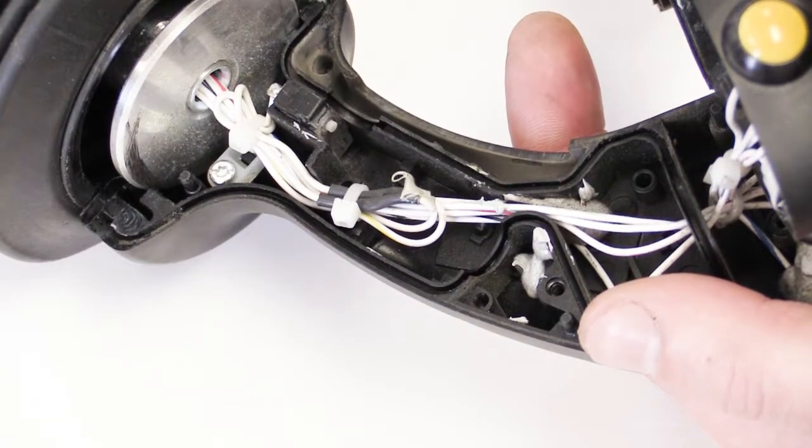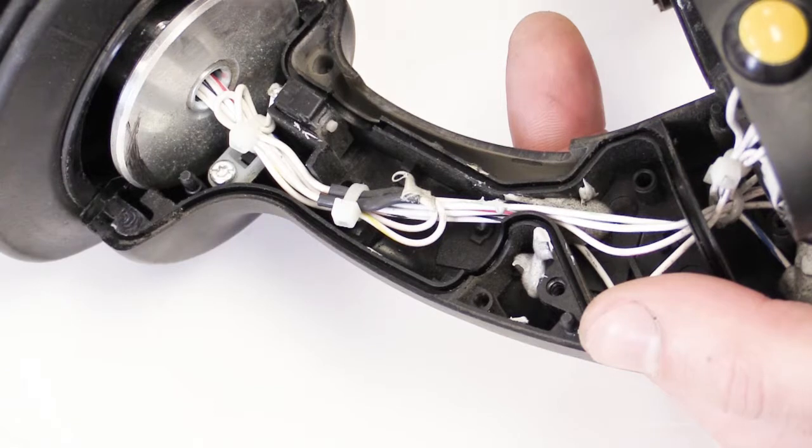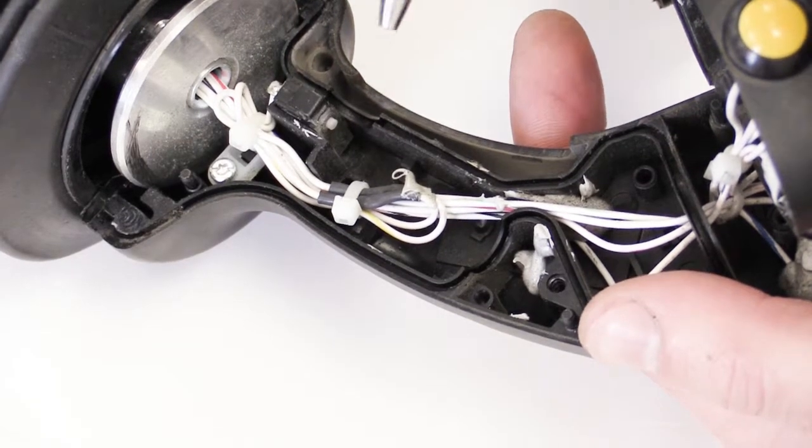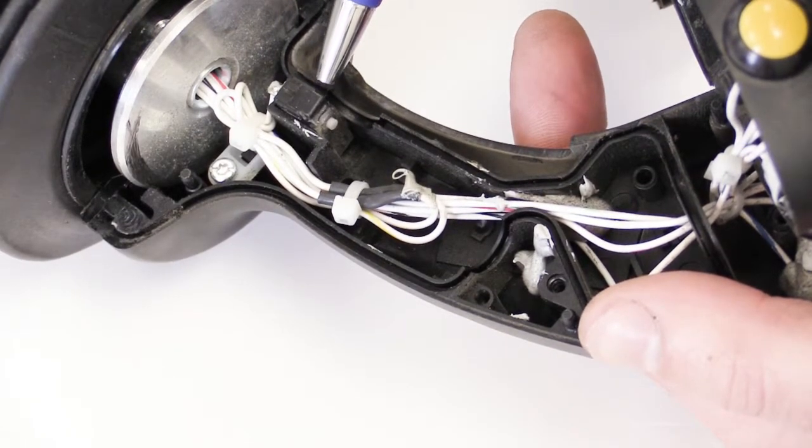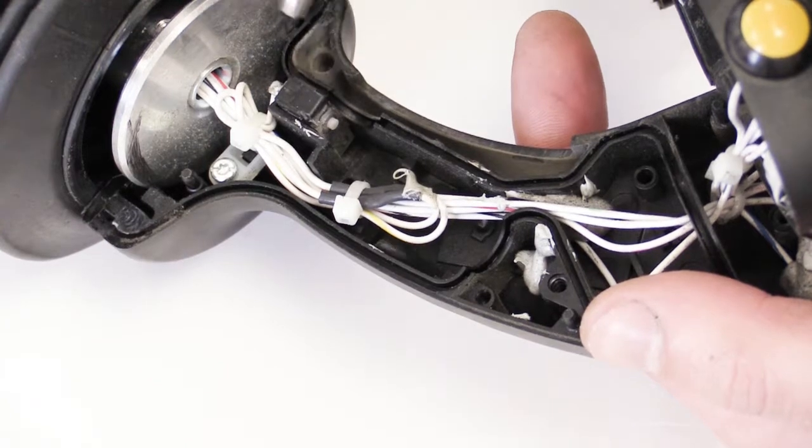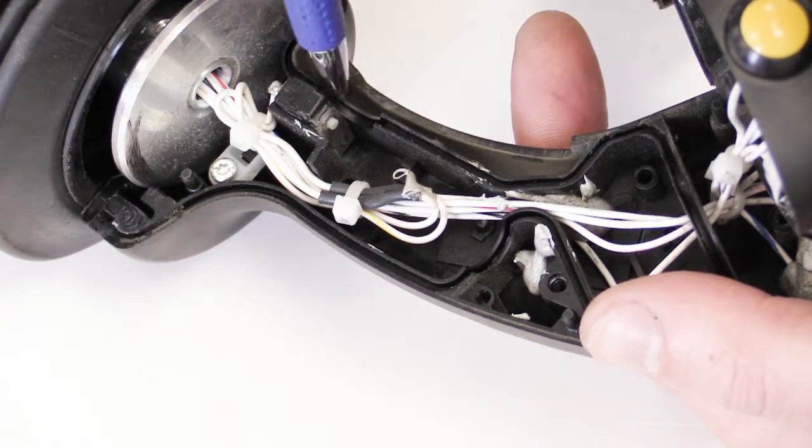Now that we've completed the function switch replacement, we'll move on to the dead man switch. The dead man switch is located at the lower end of the joystick base. This switch slides into the housing.